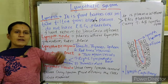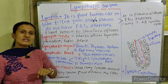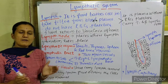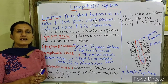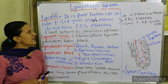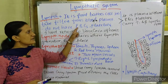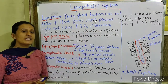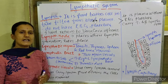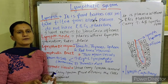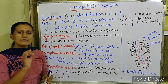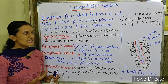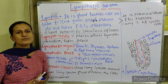Lymph is filtered from the blood plasma — it is gathered and diffused from blood plasma. But it does not contain RBCs, platelets, and some proteins. What it does contain: WBCs, some other protein molecules, and mainly lymphocytes — T-lymphocyte and B-lymphocyte — which are one of the main types of WBCs.